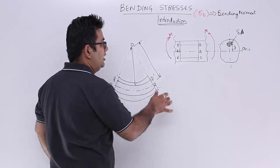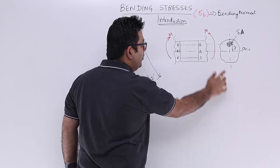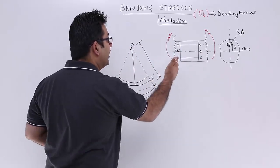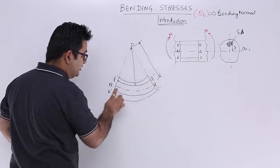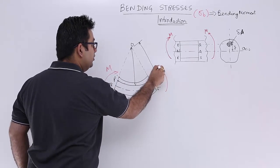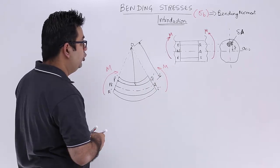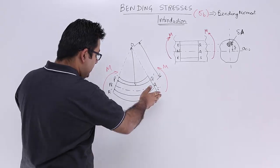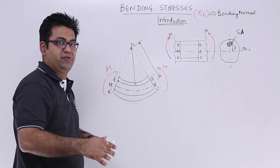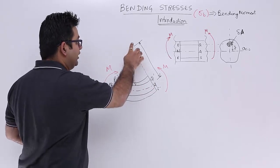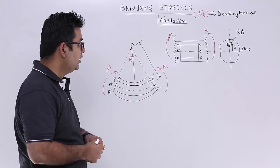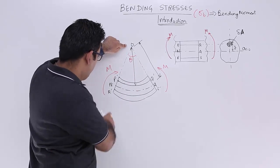The beam is acted upon by a bending moment M of such a nature that it causes sagging. Due to sagging, the element takes a curved shape — this curved shape is part of a circle. So there is some center, with an included angle of theta.